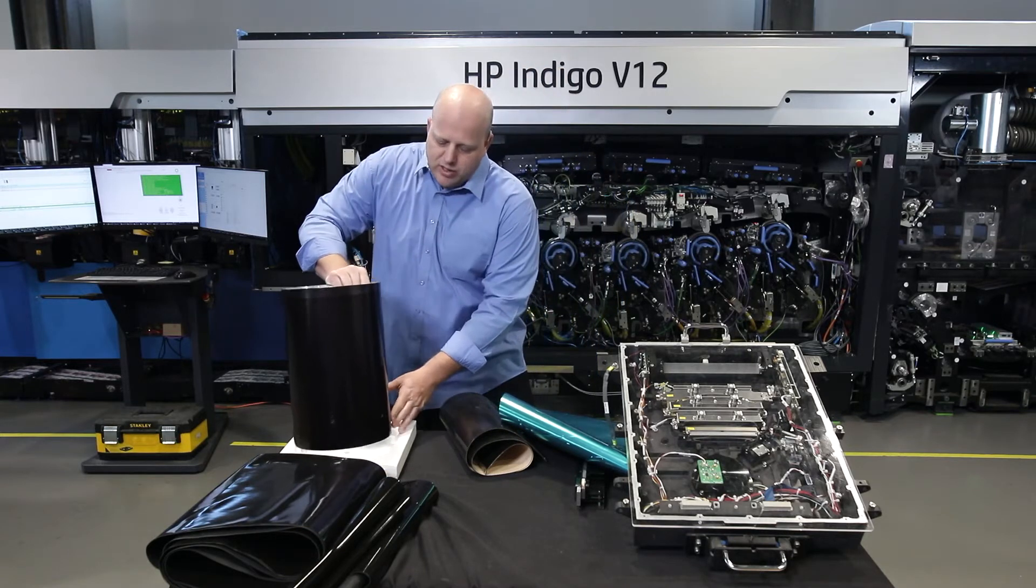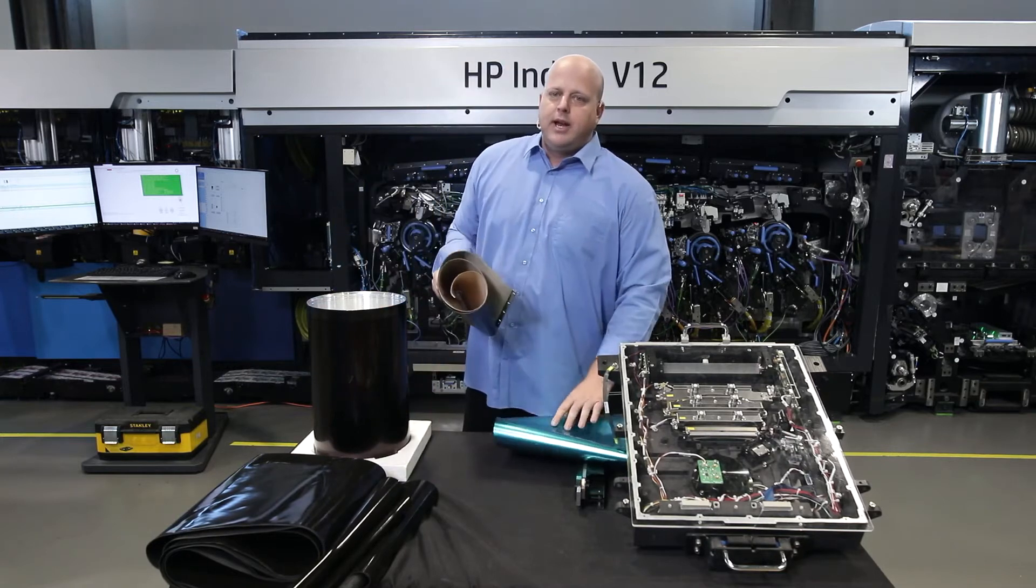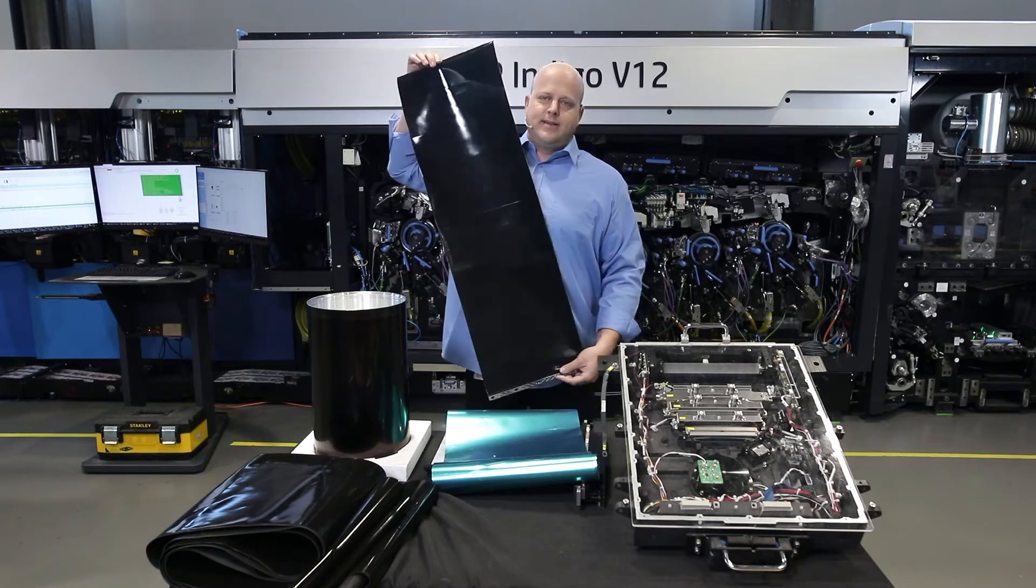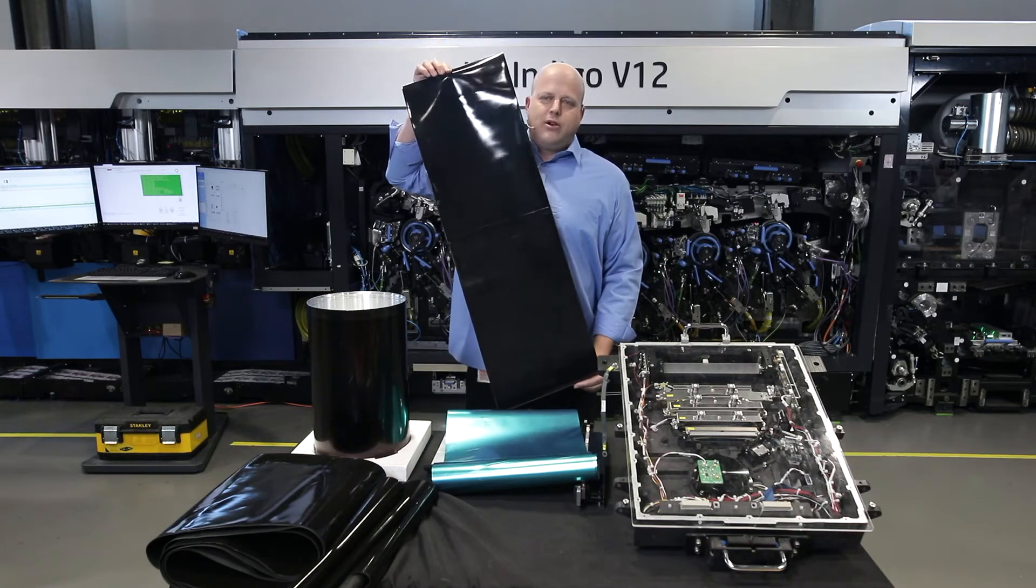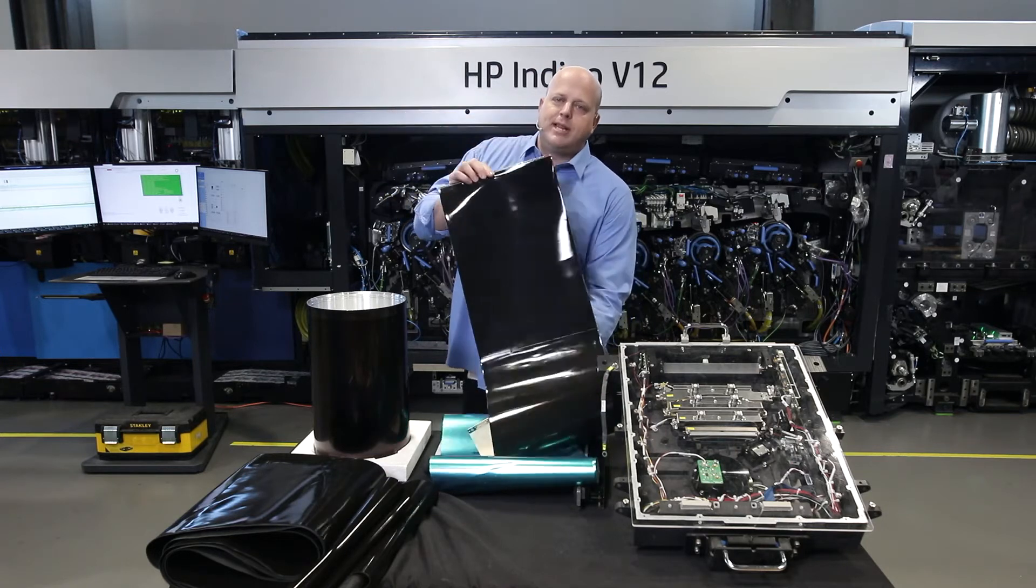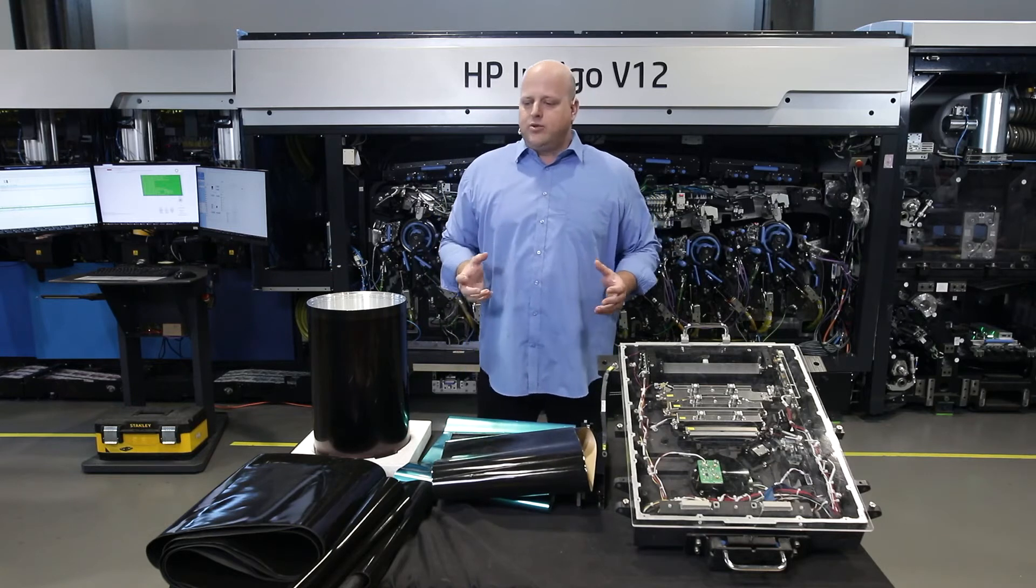Now I'm holding the blanket of Series 3, the 6K blanket. It's almost one meter long. And again, for the V12, we need to modify the blanket. We need to modify the blanket so we're able to incorporate six engines working together.